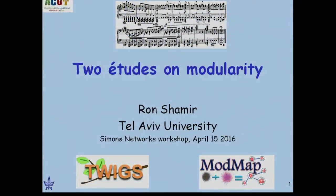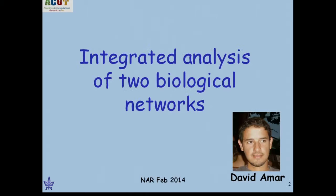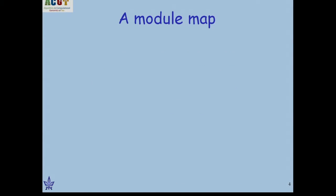I'll talk very briefly about the older project, just because it has a network context, and spend more time on the other that deals with three-way data. The first project deals with integration of two biological networks. We are looking at combining two types of networks that share the same nodes but have different semantics for the edges.